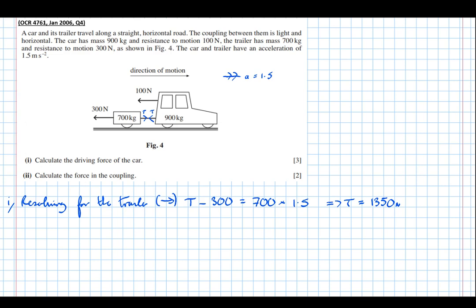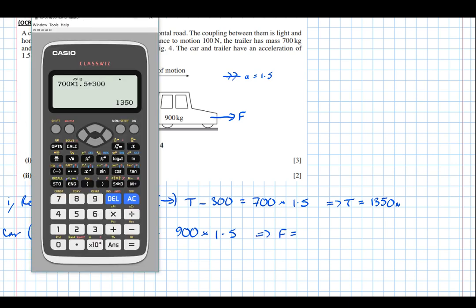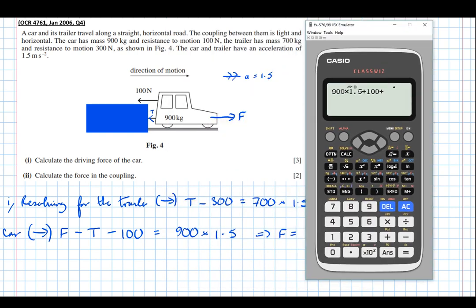Now we've got the tension in the tow bar. Let's pretend the trailer doesn't exist and cover it up — all that exists now is the car. The driving force F acts forward. Resolving for the car: F minus T minus 100 equals mass times acceleration. So F equals 900 times 1.5 plus 100 plus the tension of 1,350 newtons, which equals 2,800 newtons.